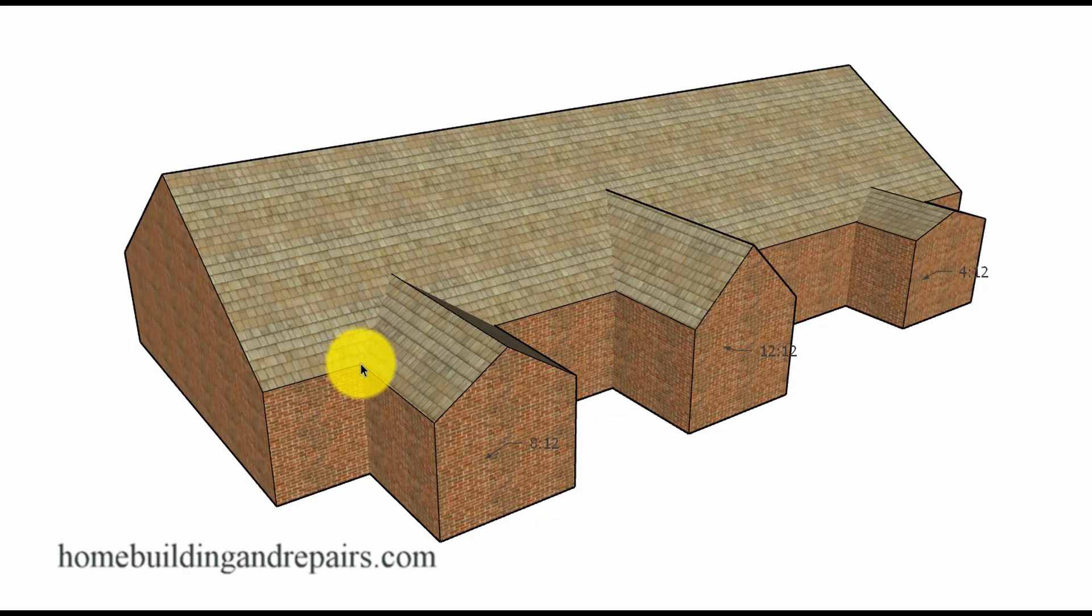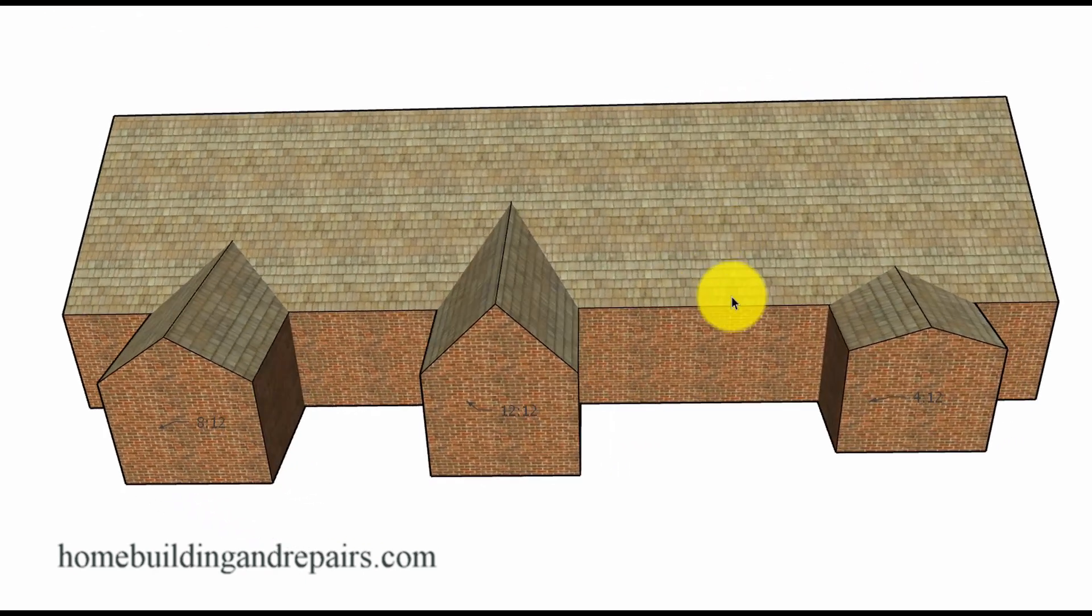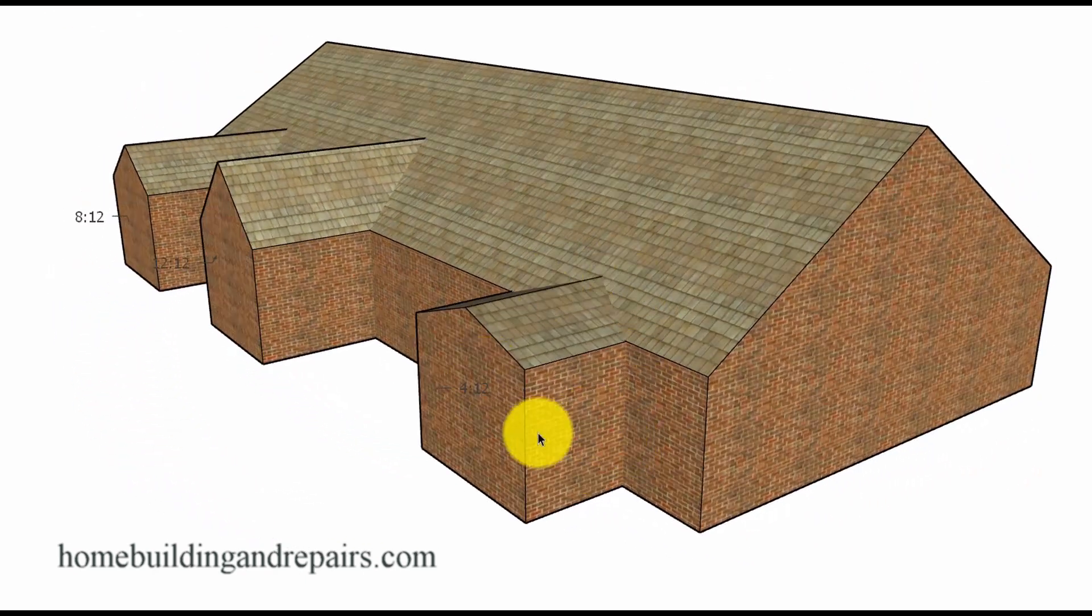For example, the valley connection line here will be different with a larger pitch or a smaller pitch. So this would be a standard method of roof framing. This one right here would be the irregular or the bastard pitch.